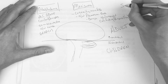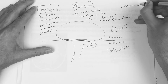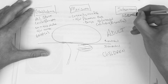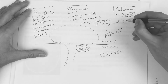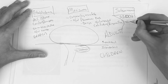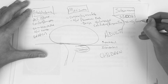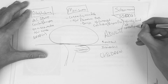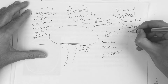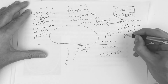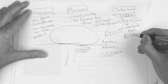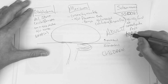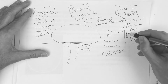The next one is schwannoma. The big thing about schwannoma: it's S100 positive. This one is usually found at the cerebellopontine angle, and most of the time it's associated with cranial nerves — mostly cranial nerve eight.